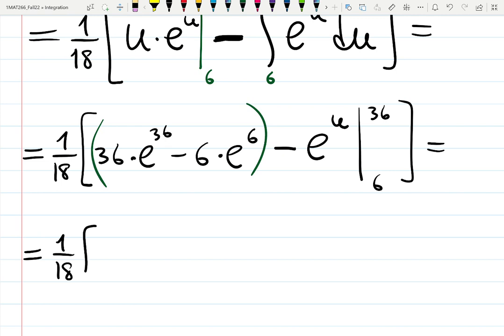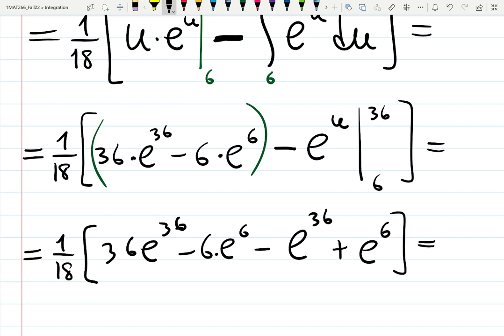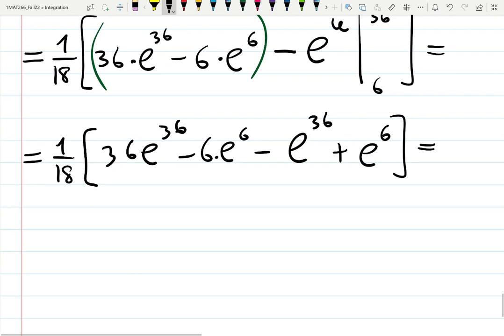So 36 e to the 36 minus 6 e to the 6—that is just some kind of number—minus e to the 36, minus minus gives you plus, plus e to the 6. So you can actually collect those terms and distribute 1 over 18.